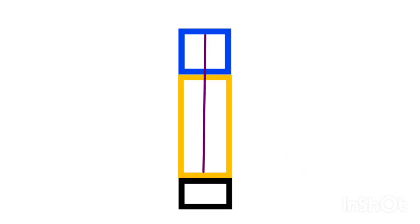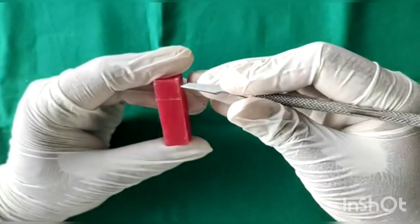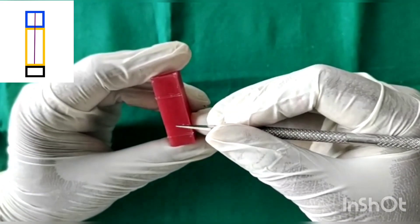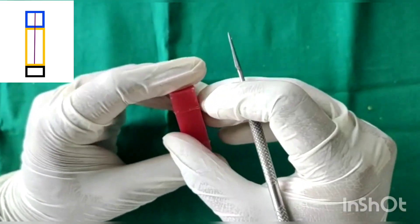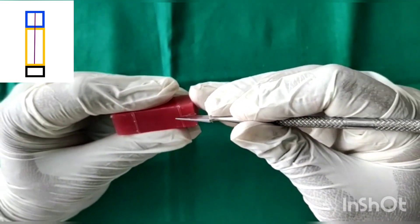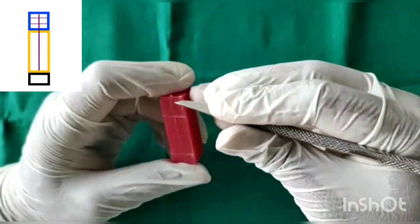Drawing a midline from root to the crown and dividing the crown into three equal halves. Dividing crown, root and base. Drawing a midline dividing the wax block through the entire block.